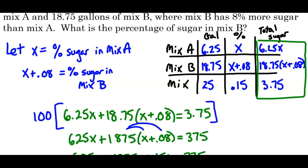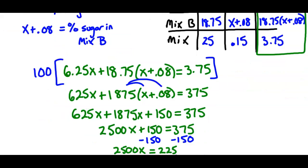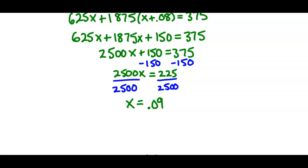So the question, what is the percentage of sugar in mix B? So in mix B, that's going to be 0.09 plus 0.08, which is 0.17. So as a percentage, that's 17% sugar in mix B.